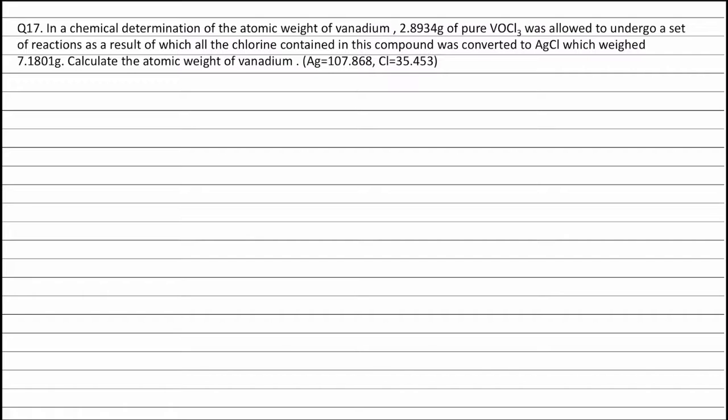Let the atomic weight of vanadium be equal to W. The chlorine present in VOCl3 is converted into AgCl.